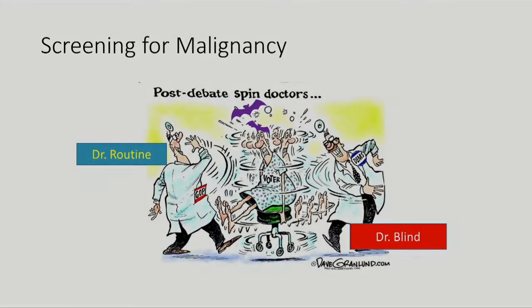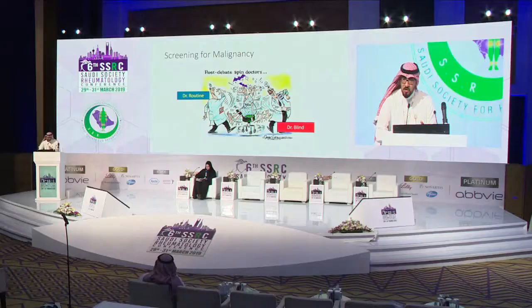Should we do routine or blind screening? Routine screening means performing a proper history, physical examination, and requesting CBC, urinalysis, ESR, CRP, stool for occult blood, and chest X-ray — proceeding further only if something is abnormal. Blind or extensive screening means doing all of the above plus a whole-body CT scan, mammogram, and gynecological ultrasound.